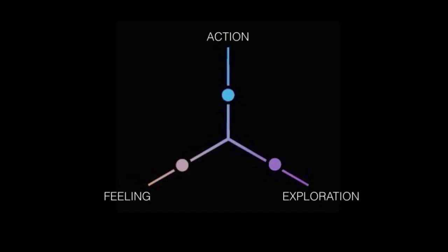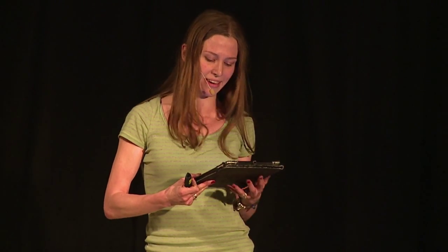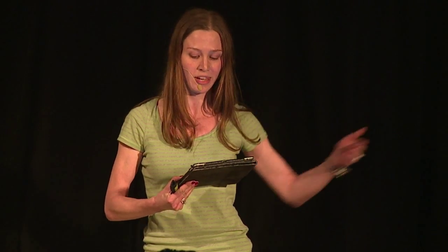We can see these three things as three basic ways of structuring our LARP and the player's storyline. We'll call the one that deals with thrill and chance to win the axis of action, because it's about doing things in the LARP. The second, that deals with surprise, is the axis of exploration, because it's about exploring the world. And the third, that deals with emotions, is the axis of feeling.